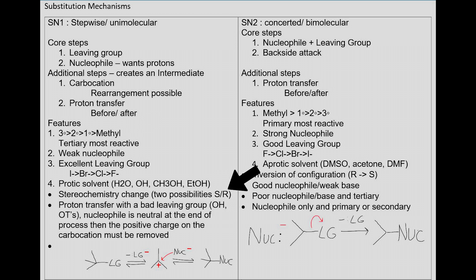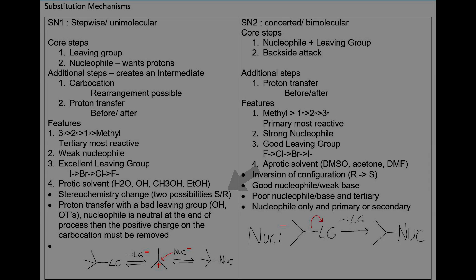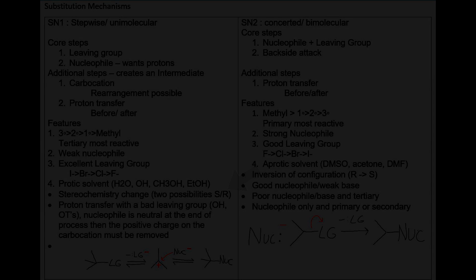An SN1 reaction will also have a stereochemistry change, most likely. The two possibilities are the S and R changes. A proton transfer with a bad leaving group — those will have OH or OTs — will give you a sign that it needs to have a proton transfer. A nucleophile is neutral at the end of this process, then the positive charge on the carbocation must be removed. In the SN1 reaction, you're going to have first the leaving group leave, and then the nucleophile attack the carbocation, and then you will create your product. This is why it is called a stepwise reaction.